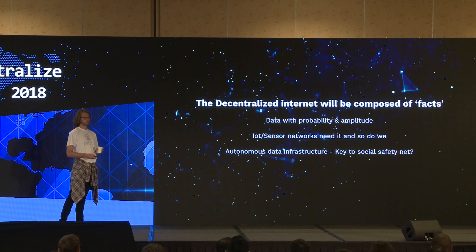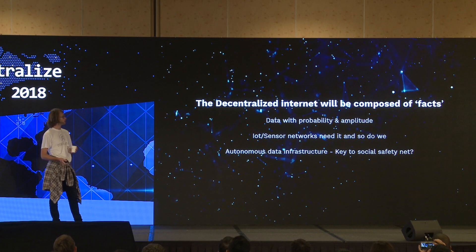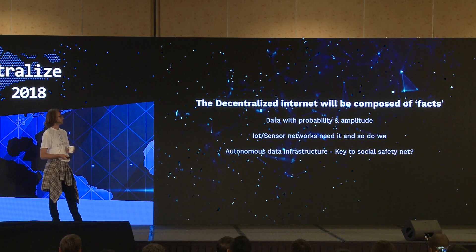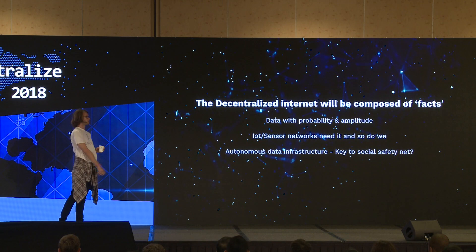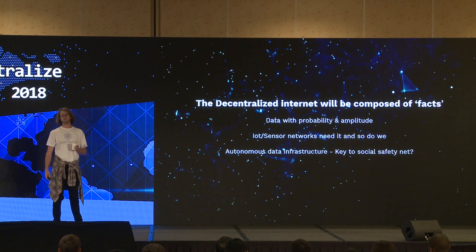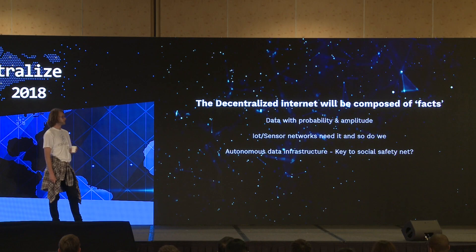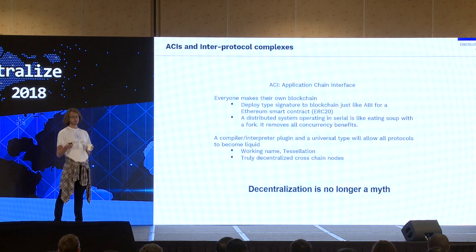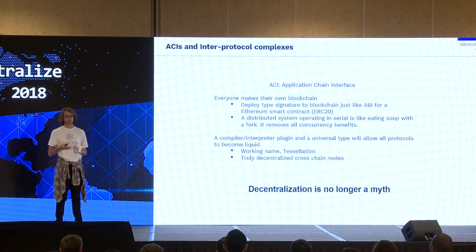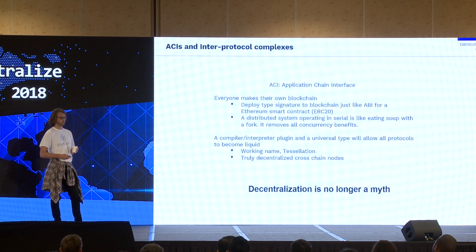The decentralized internet will be composed of facts. Every single blockchain contains data with some notion of probability associated with it. This could possibly be a solution to fake news — IoT devices, sensors, robots, and self-driving cars all need it, and maybe we do too. Our conjecture is that this autonomous data infrastructure — essentially removing wasted heat from our economy — could be an easy way to implement a global social safety net. This notion of applying this framework to model blockchains themselves will be something akin to an ERC-20 framework — it works both on paper and with your compiler. Decentralization is no longer a myth; it's as simple as a compiler plug-in.